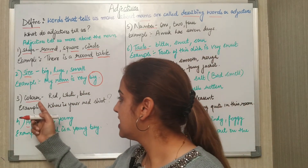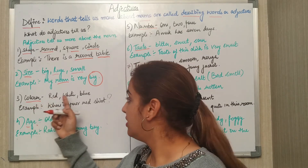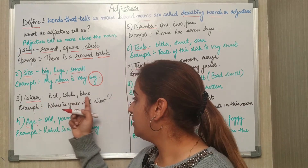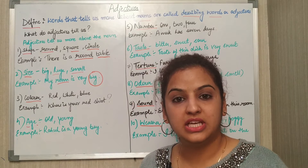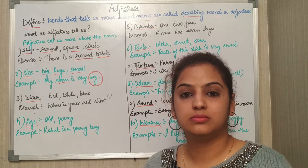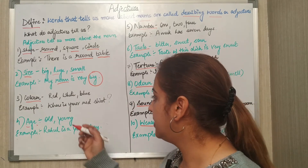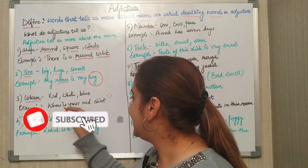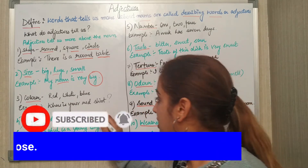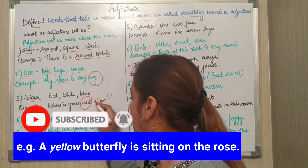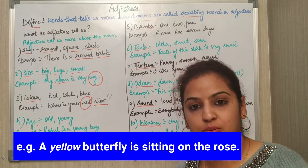Next is color — red, white, blue, yellow, purple — any color. Example: Where is your red shirt? Now here 'red' is an adjective and 'shirt' is a noun.